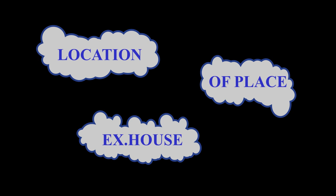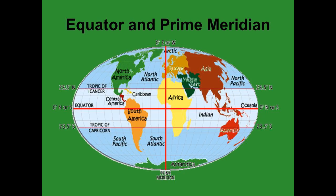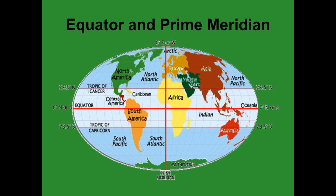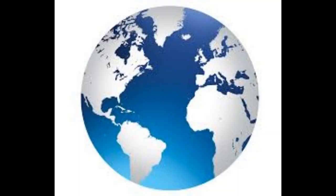Before we go to the latitudinal location, let's recapture what we learned previously. Please look at this globe. This particular line is called the equator — a line that goes through the middle of the earth, dividing it into two equal halves: the northern hemisphere and the southern hemisphere. India is located in the northern hemisphere.